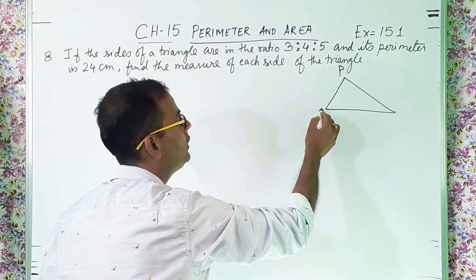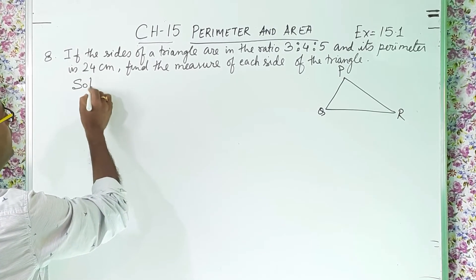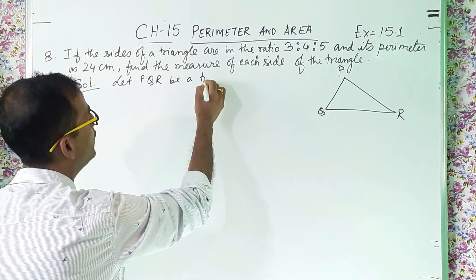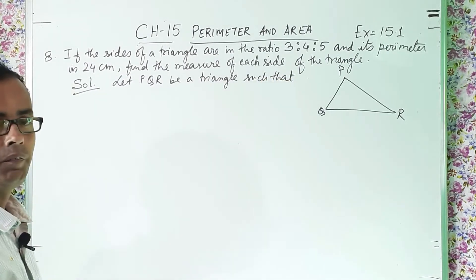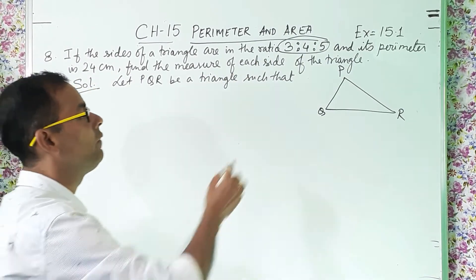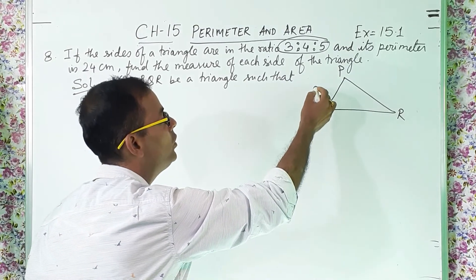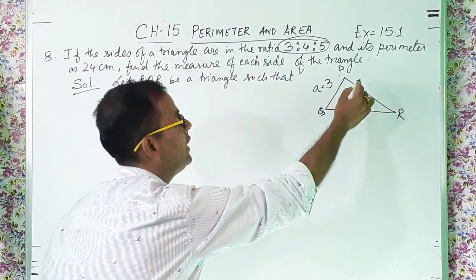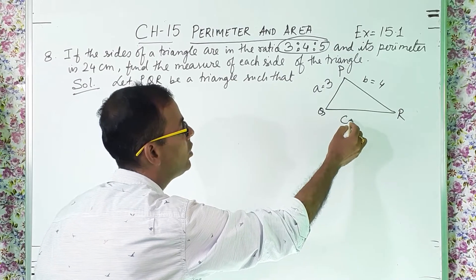We can give the name PQR. Now after that, if I want to start the answer solution. So let PQR be a triangle such that, they are told the sides are in the ratio 3 is to 4 is to 5. That means one side is 3 parts, another side is 4 parts, another side is 5 parts. So what we will do? Let us take this side as small a and it is how many parts? 3 parts. Another side is b, so let us take that one as 4 parts. And another side is c, so we will take it as 5 parts.